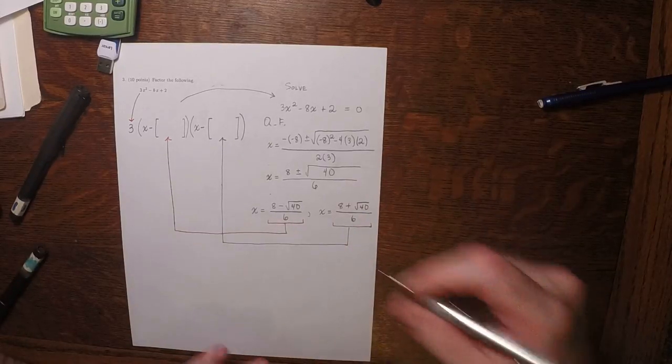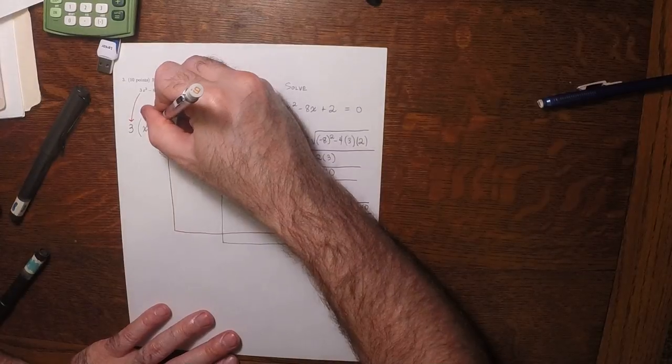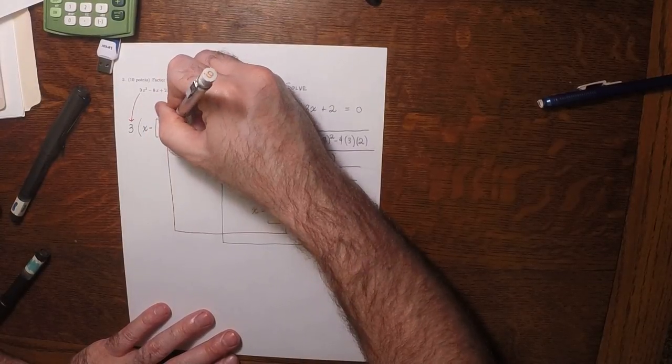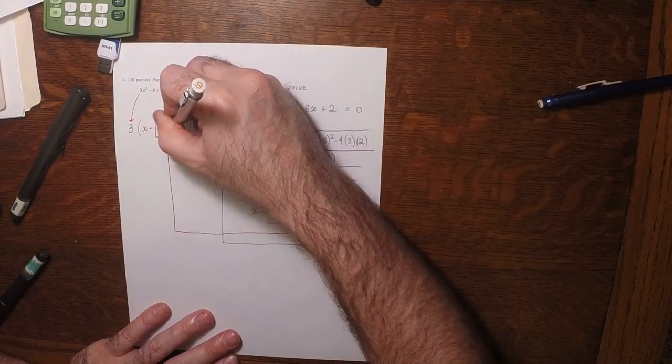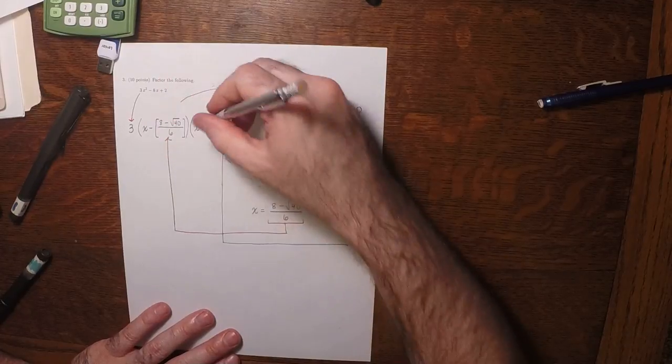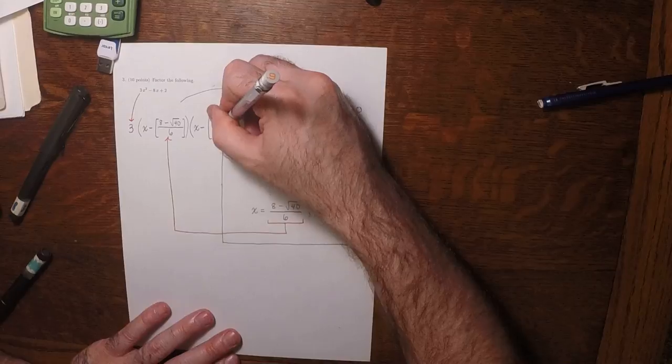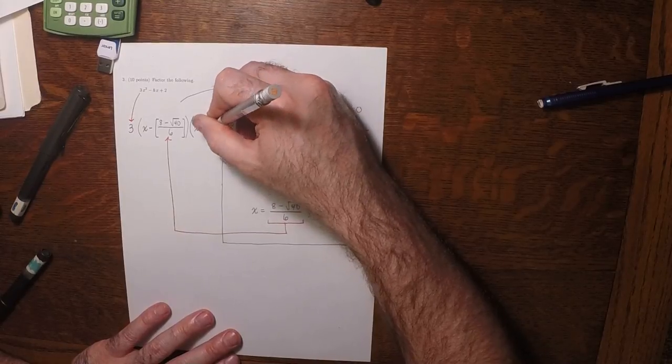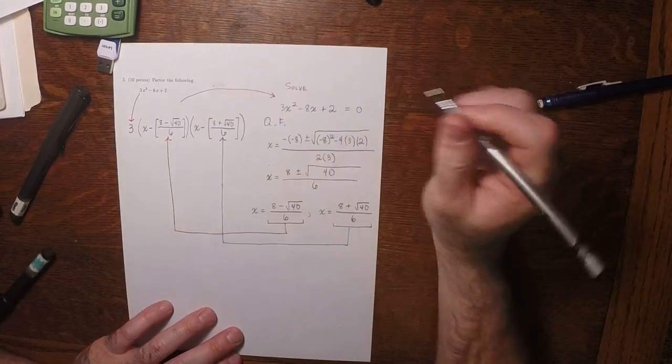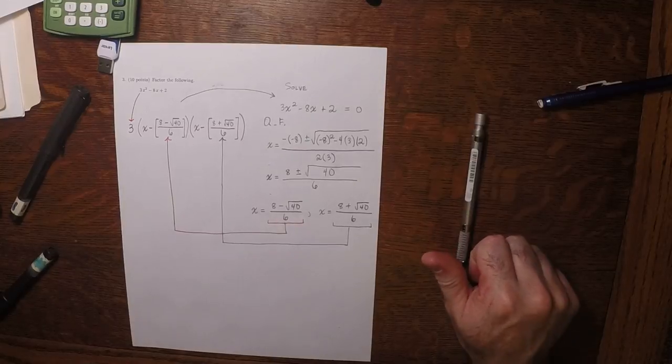So the factorization is here: (x - 8 minus square root 40 over 6) and (x - 8 plus square root 40 over 6). And that's the answer.